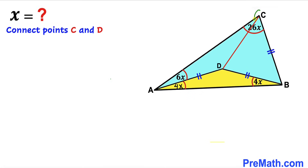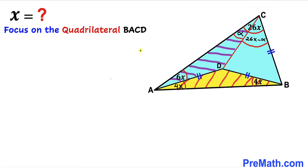Next, I have connected point C with point D. As a result, the whole angle of 26x has been divided into two parts. Let's call one part alpha, making the other part 26x minus alpha.